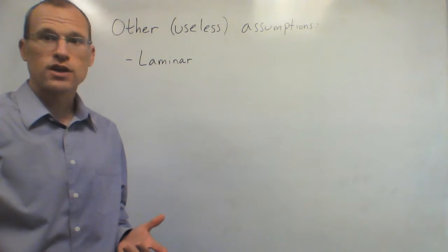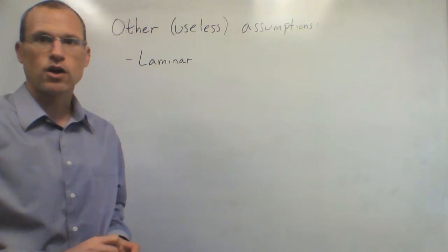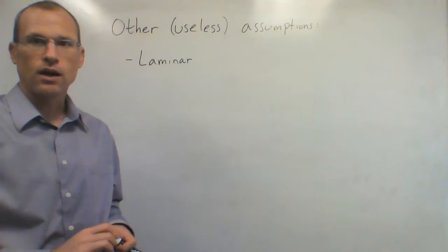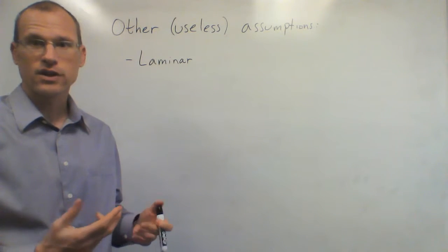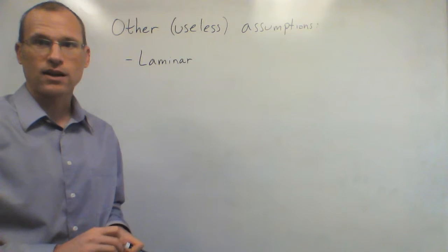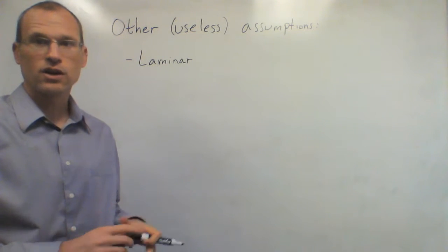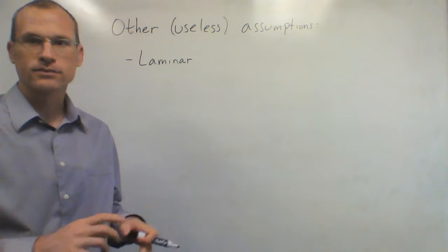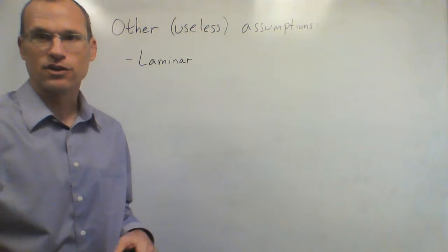There are other assumptions sometimes stated in the problem, like the flow being laminar. That actually doesn't help us reduce the equations at all — it's an implicit condition we already needed to get to the Navier-Stokes form we're using. So while it's good to know, it doesn't simplify things further.